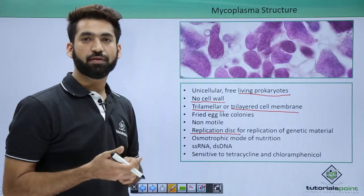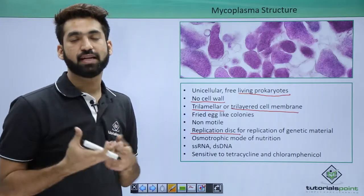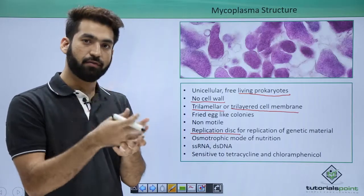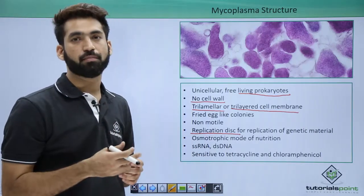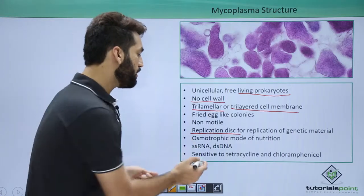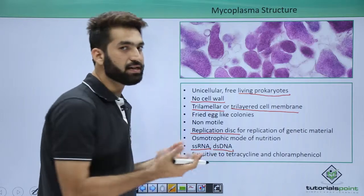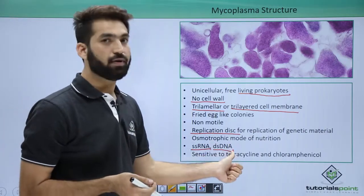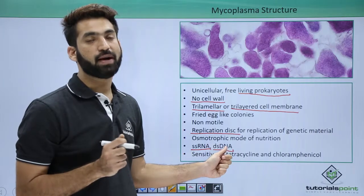Their mode of nutrition is osmotrophic, meaning they absorb nutrients. They can be parasitic or saprophytic, absorbing nutrients from decomposing substances. The RNA present in them is single-stranded RNA, and the DNA is double-stranded DNA, similar to bacteria.